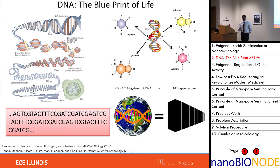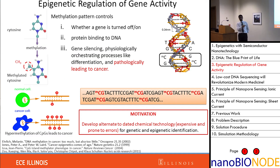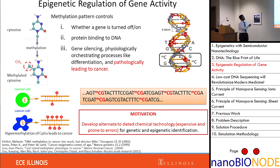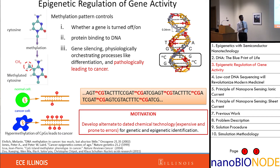Apart from the information held in these bases, you can also have information by chemically modifying these bases, which are called epigenetic modifications — 'epi' meaning outside. The most common of these modifications is methylation, where a CH3 methyl group is attached to the fifth carbon atom of the cytosine base. These methylation patterns change over the lifetime of a cell and are not fixed for a given living organism. These methylations occur in pairs called CpGs.